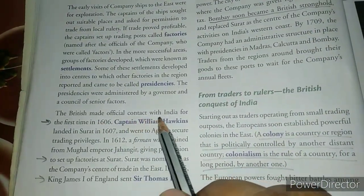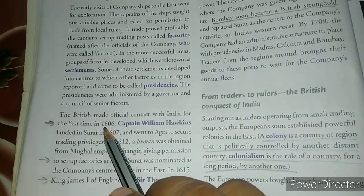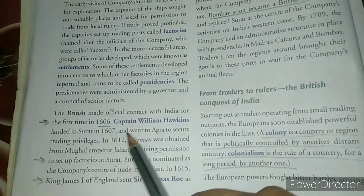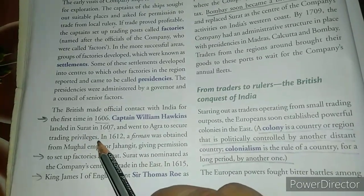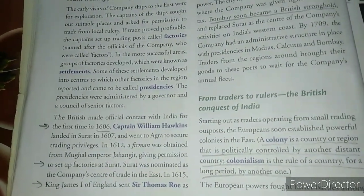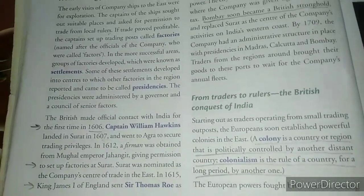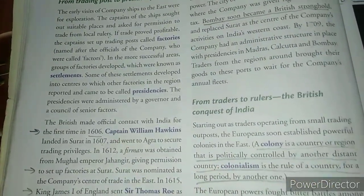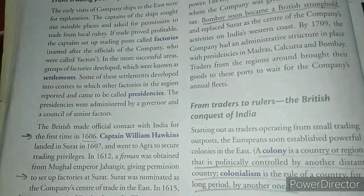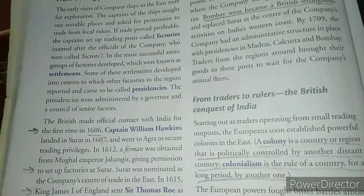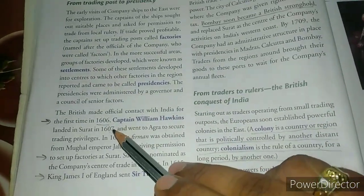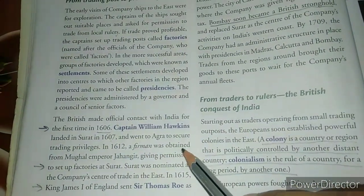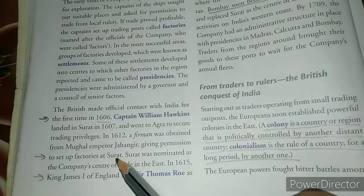The British made official contact with India for the first time in 1606. Captain William Hawkins landed in Surat in 1607 and went to Agra to secure trading privileges. He was the first British man to visit India. At that time Jahangir — son of Akbar — was king, and his capital was Agra, so Jahangir met with Captain William Hawkins there.